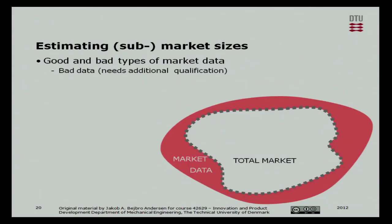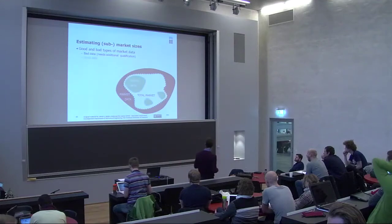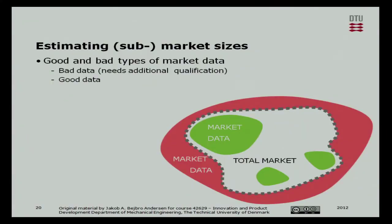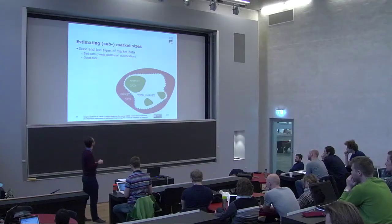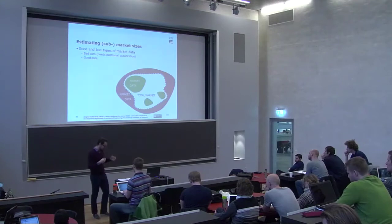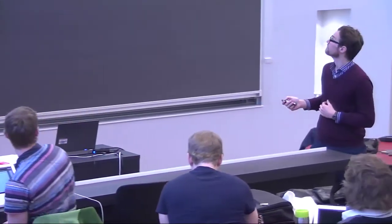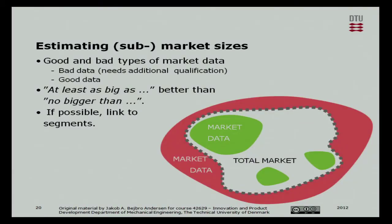It's completely legitimate to write down the qualifications and say we based this market size on these assumptions. But it would be much better — and this is what I suggest — to look into sub-markets, parts of the market that are delimited somehow and that you know are within the market. That tends to be available. It may not be a very big sub-part, but if you can find a few sub-parts and show that it's big enough, that's a good basis for going into a business. The general idea is that it's better to say 'it's at least as big as' than 'no bigger than.'